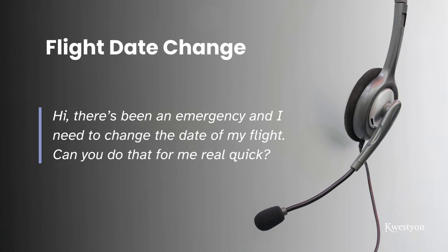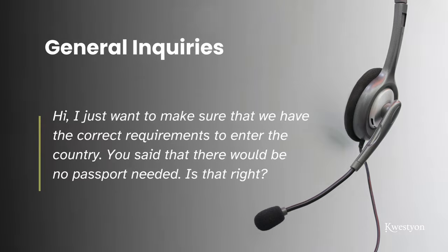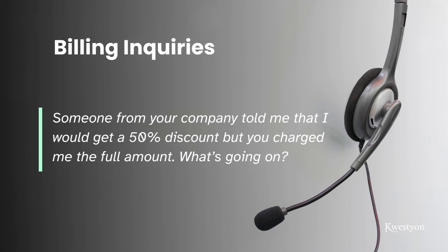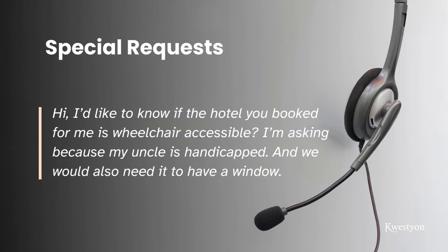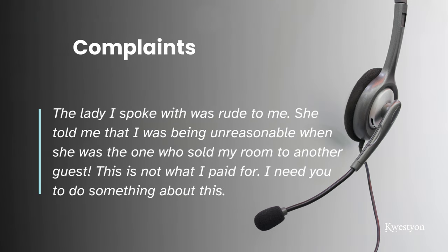Whether you work for a travel agency or a direct vendor, the types of issues you're going to be encountering on a daily basis are quite similar. These include flight date changes due to emergencies, verifying entry requirements for a country, billing disputes over promised discounts, checking hotel accessibility for guests with special needs, and handling complaints about agent behavior. But if you're working for a travel agency, you're probably going to be doing more — which is calling direct vendors on behalf of customers.